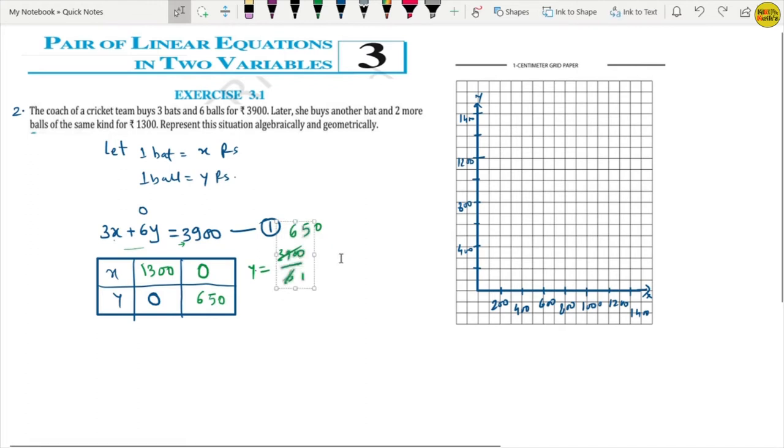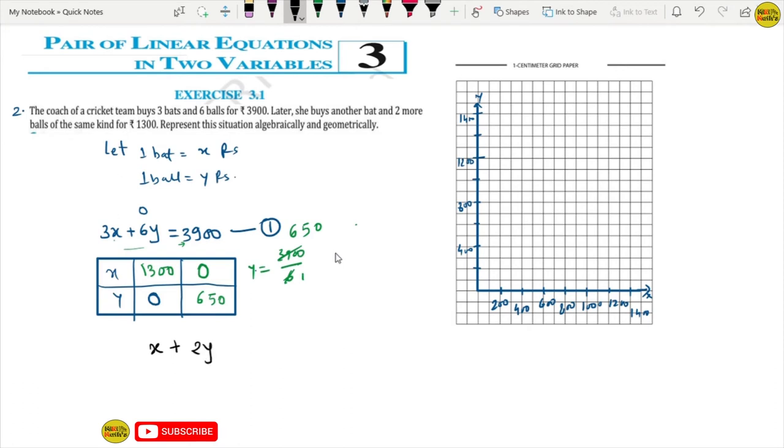Let's see. What is the question number 2? The question number 2 is: let her she buys another bat. Another bat means x bat, one bat and two more balls. That means 2y at rupees 1,300. Same kind of, same way here. So, now this is our second equation.